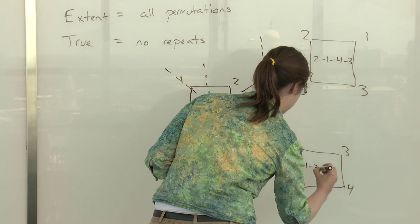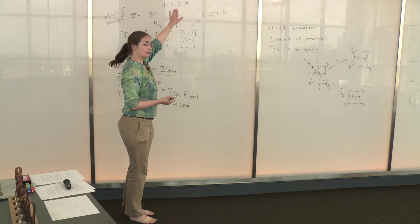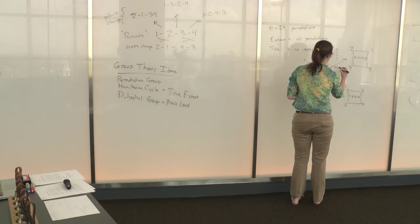And that is exactly one of the sequences that we got from doing this middle swap again from one two three four. So this is the cross change and this is the plain change.